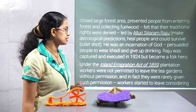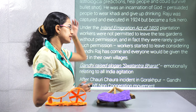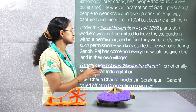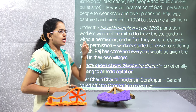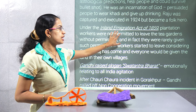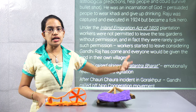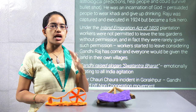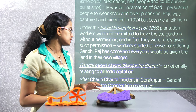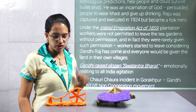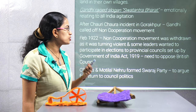Similarly, there was the Inland Immigration Act of 1859. Under that act, plantation workers were not allowed to leave the tea gardens or plantations without permission. If they did so, they were caught and put in jail. Workers now felt that under Gandhi Raj they could have their own lands and revolt, so people started moving out of the plantations. Gandhiji raised the slogan Swatantra Bharat, which gained emotional appeal among common people.